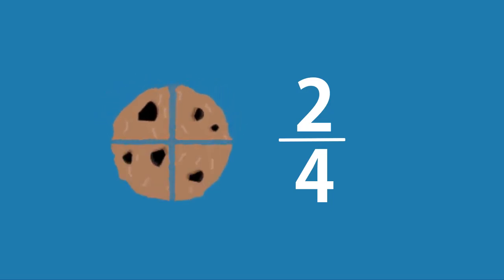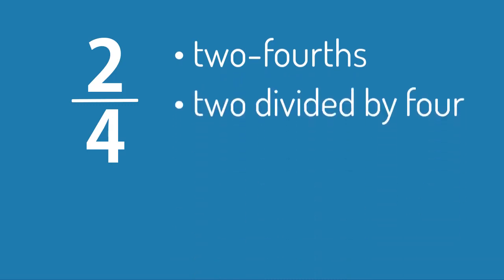The bottom number is the number of pieces in the whole object. A common fraction can be read three ways. This fraction can be read as 2 fourths, 2 divided by 4, or 2 out of 4.